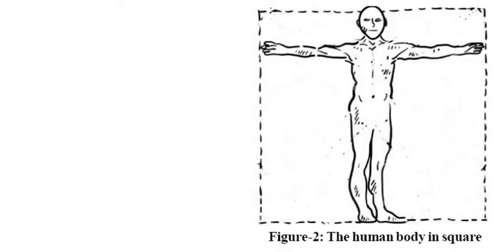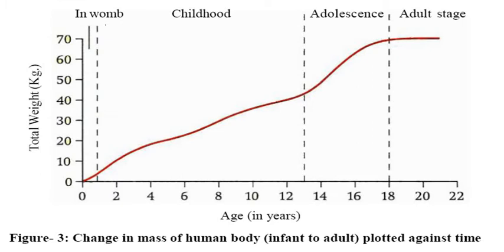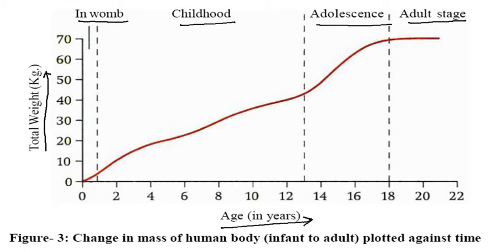What is the growth and what is the size of the human body? The size of the human body is always in a square form — if we consider height and breadth of hands, it is always square form. Now come to the growth graph: it shows inworm (infancy), childhood, adolescence, and adult stage. Total weight in kg is on the Y-axis and age in years is on the X-axis.